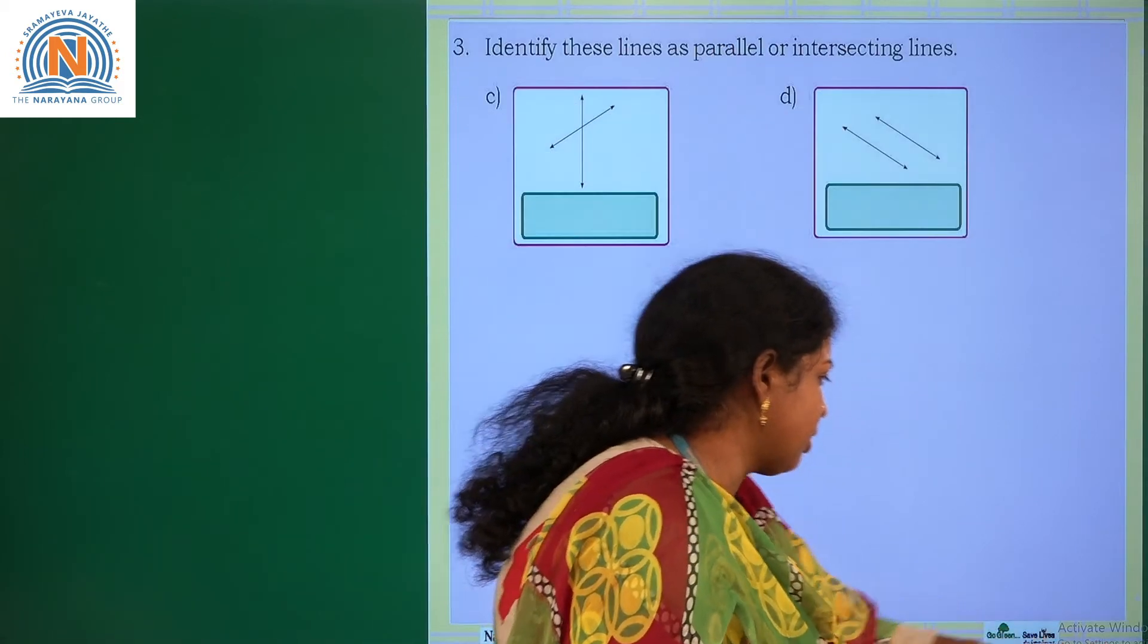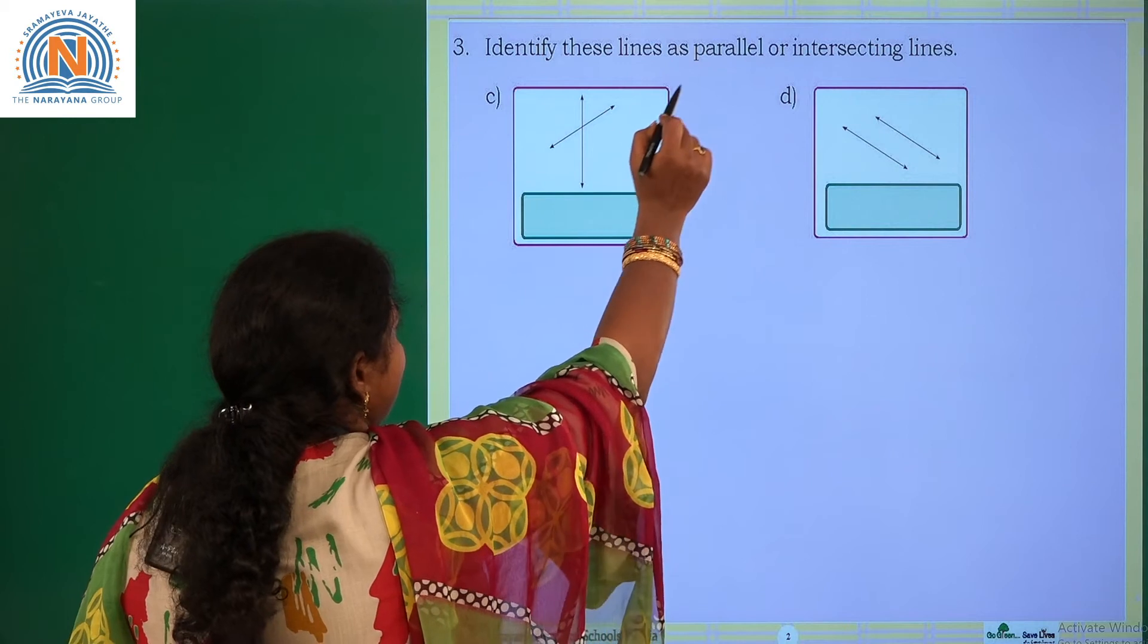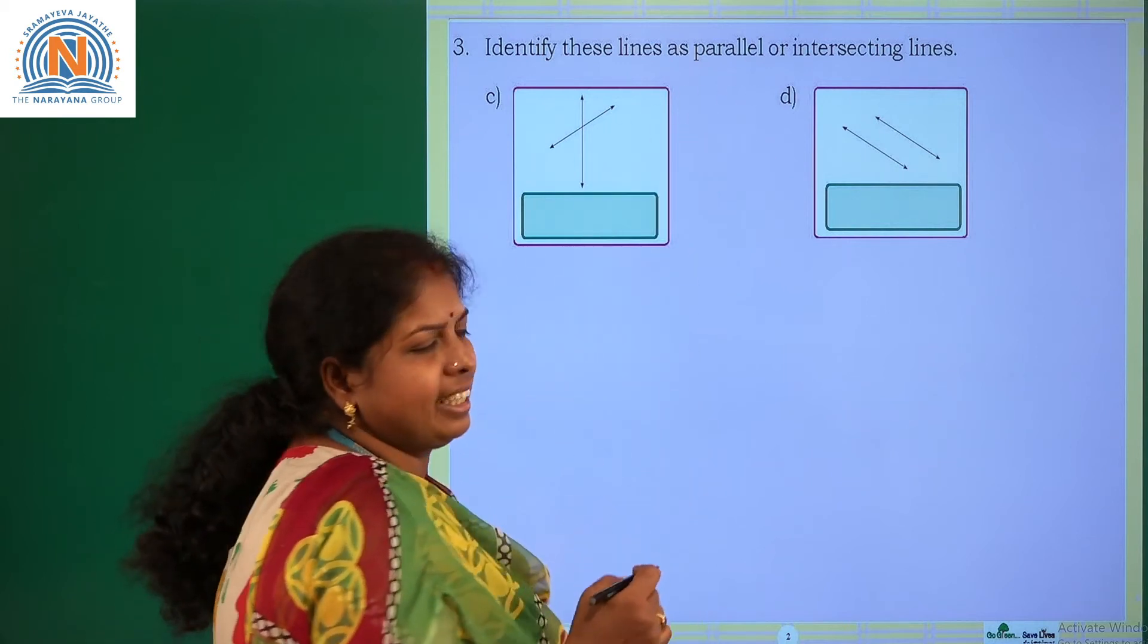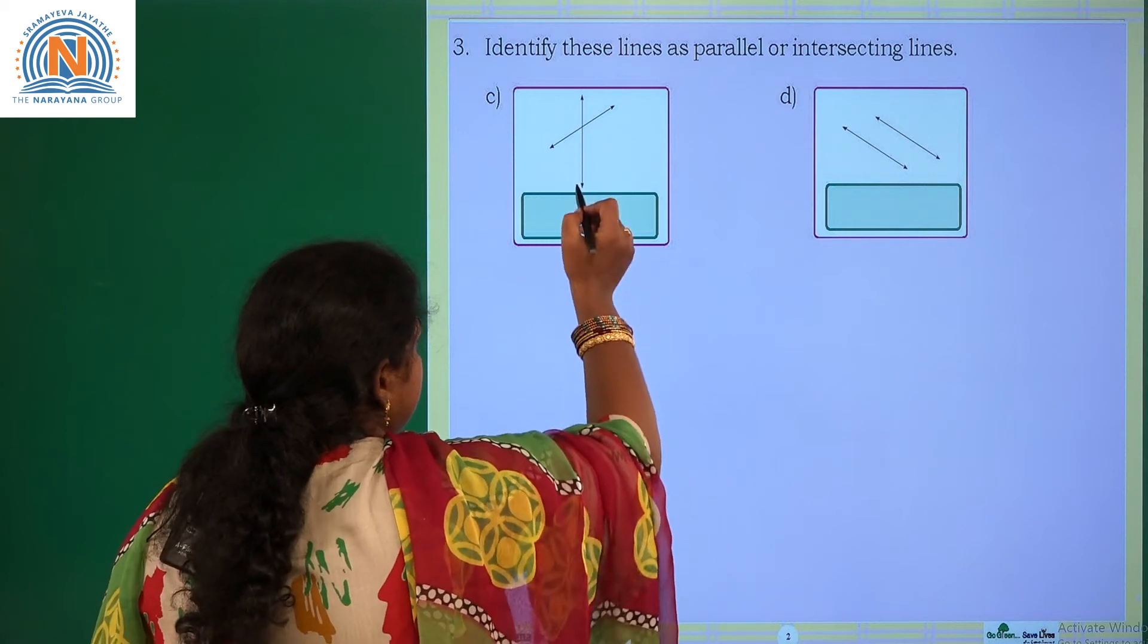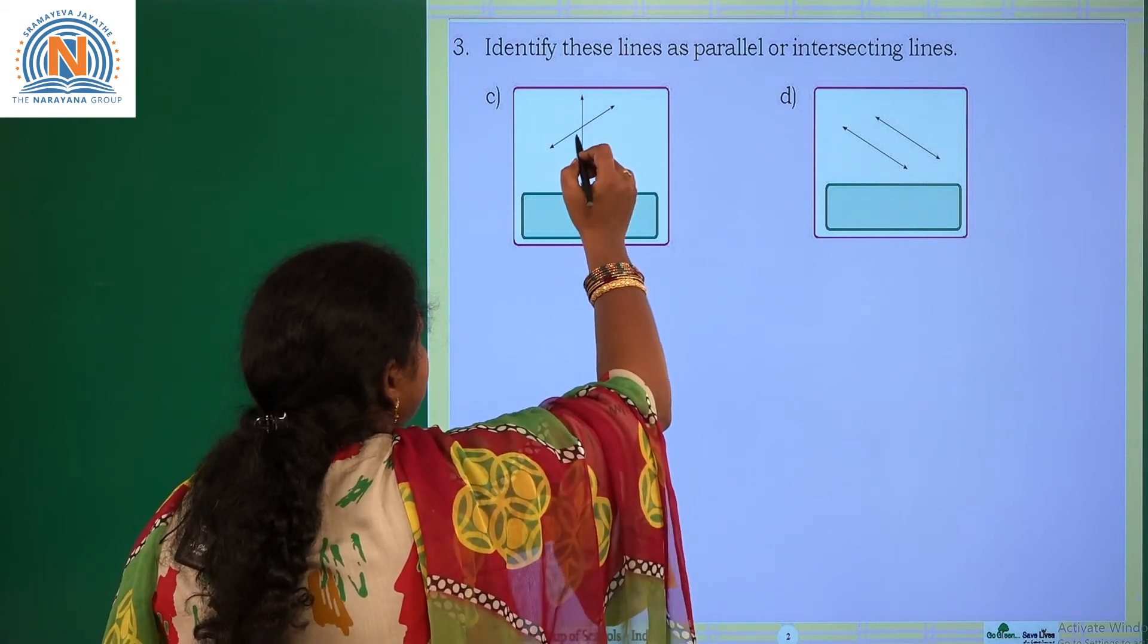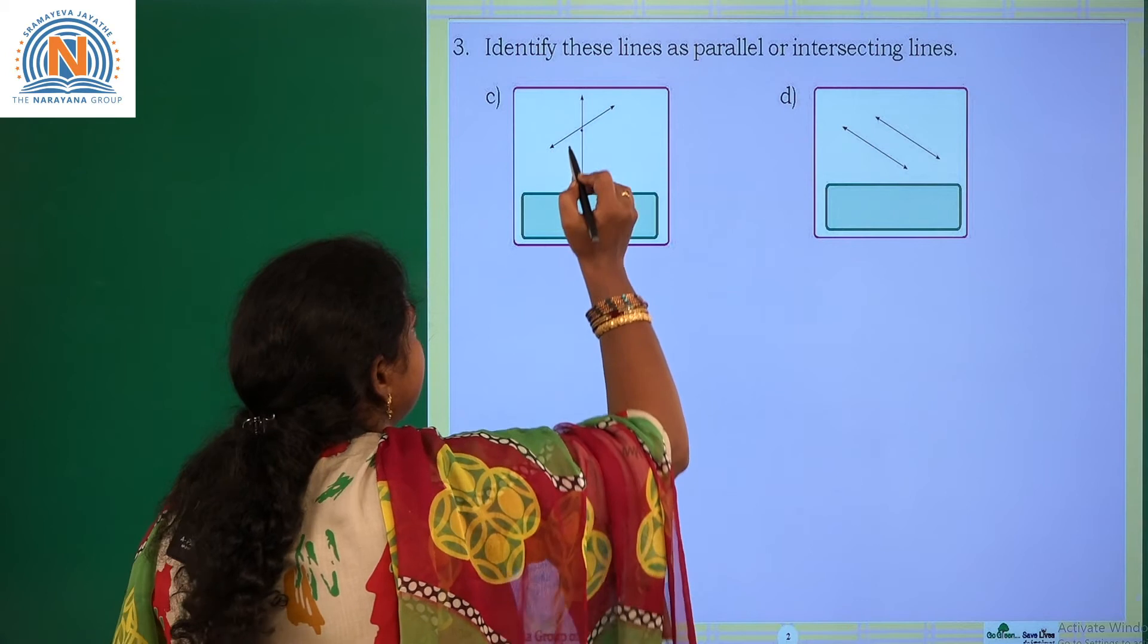Let us solve the next one. Identify these lines as parallel or intersecting lines. If you observe the given picture, they both are intersecting at one point.